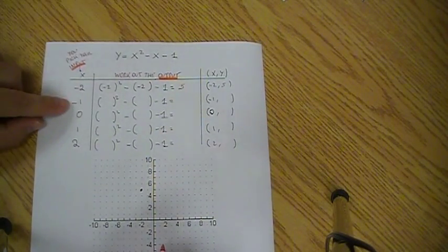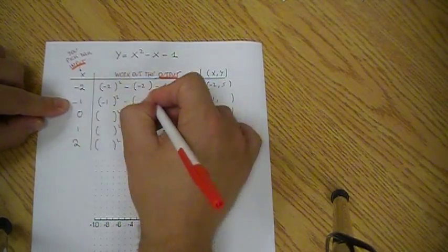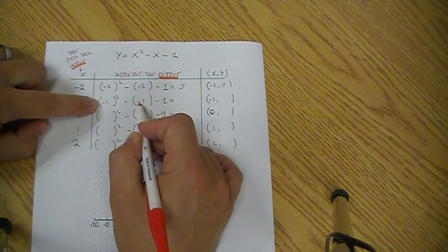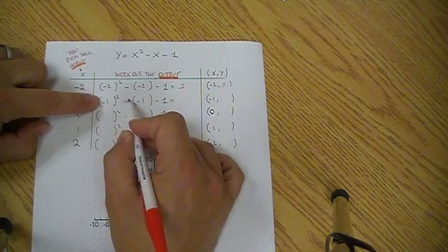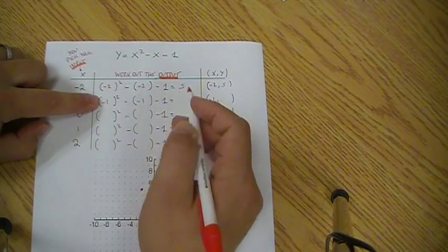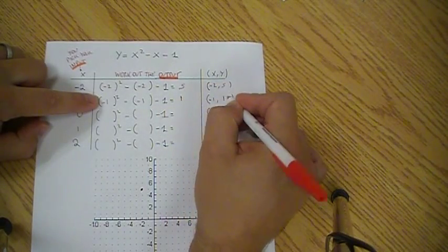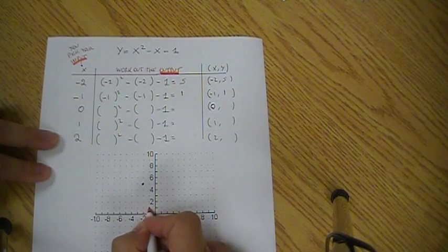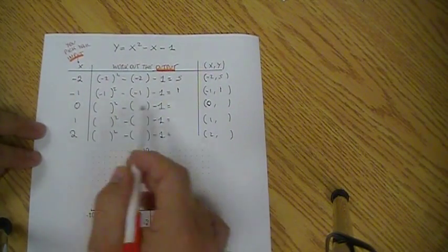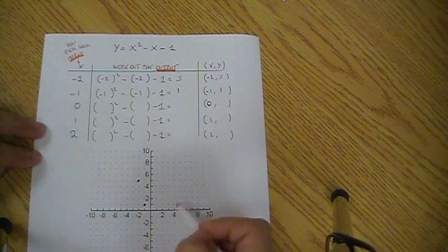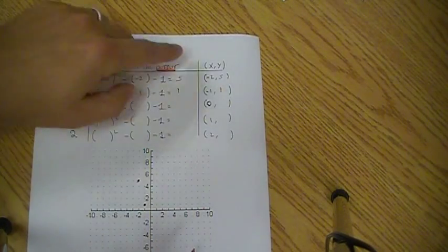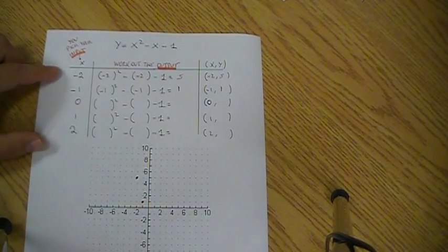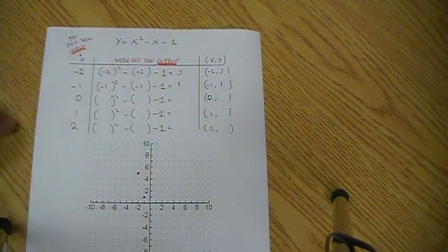Then I'll check the second one. Minus one squared is one, minus minus one is plus one, so one plus one is two, two minus one is one. So minus one and one is another point. You can continue, and then once you finish putting some points you may get the pattern. If not, just keep on putting points until you run out of the graph. This would be actually a parabola.